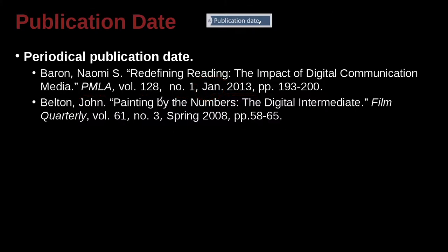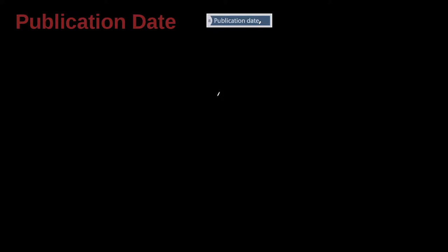Belton John, 'Painting by the Numbers: The Digital Intermediate.' Film Quarterly is the name of the journal. We've got a volume number, a number, and then this journal uses the season — Spring 2008. If that's the way the journal does it, then that's how we copy it.